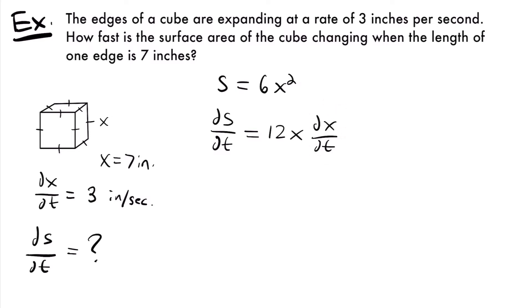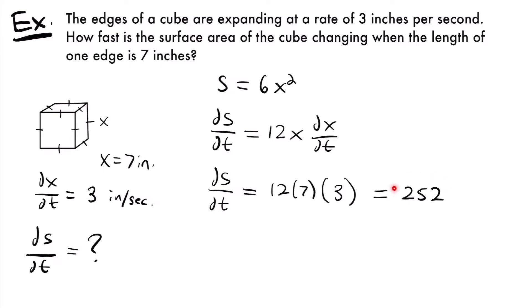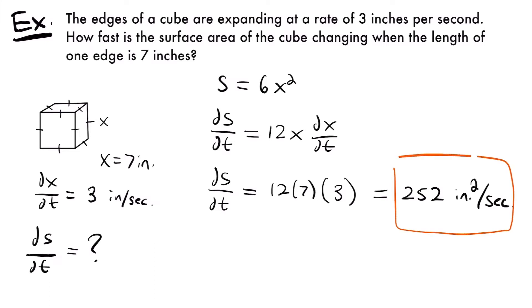Now we plug in our known values. ds/dt equals 12 times 7 — since x equals 7 — multiplied by 3, since dx/dt equals 3 inches per second. Multiplying 12 times 7 times 3 gives 252. So the surface area is changing at 252 square inches per second.